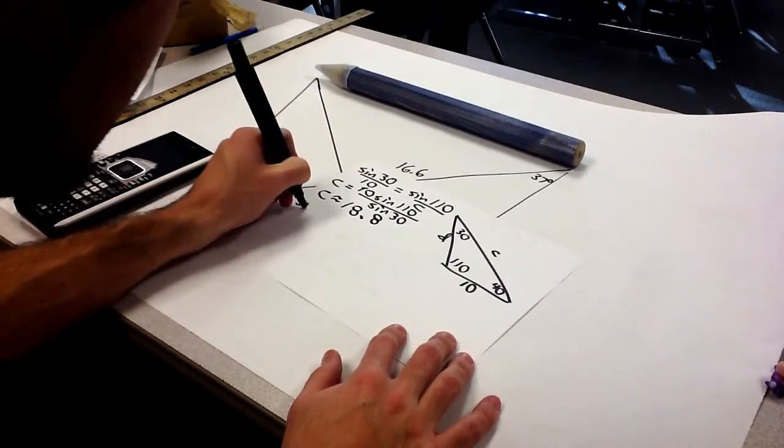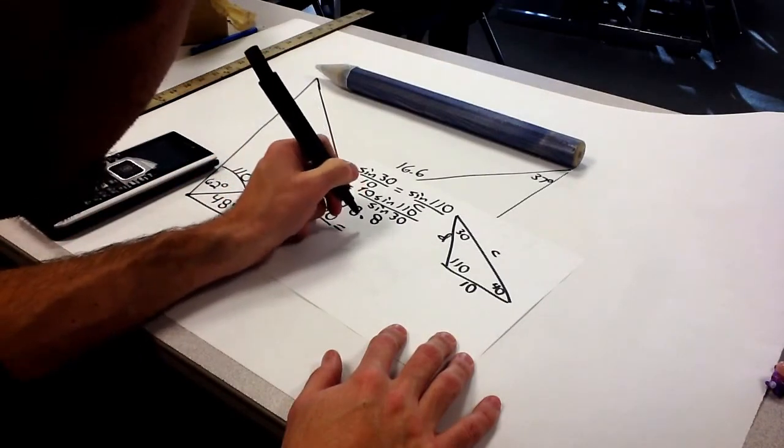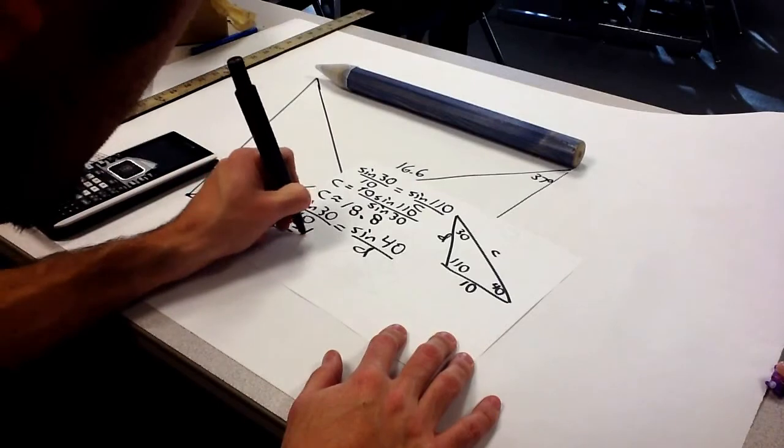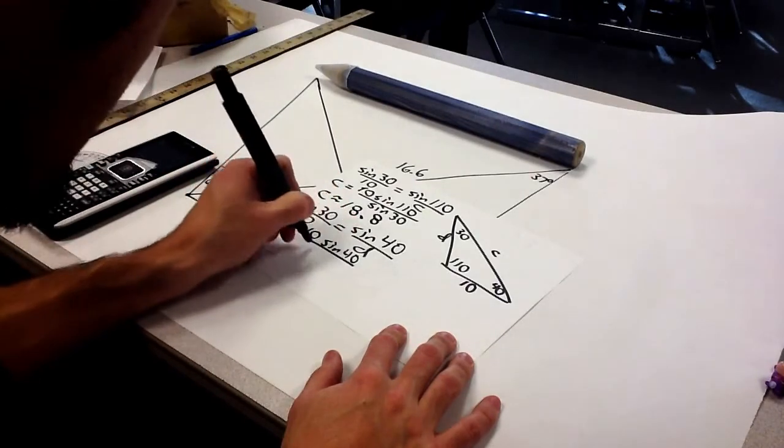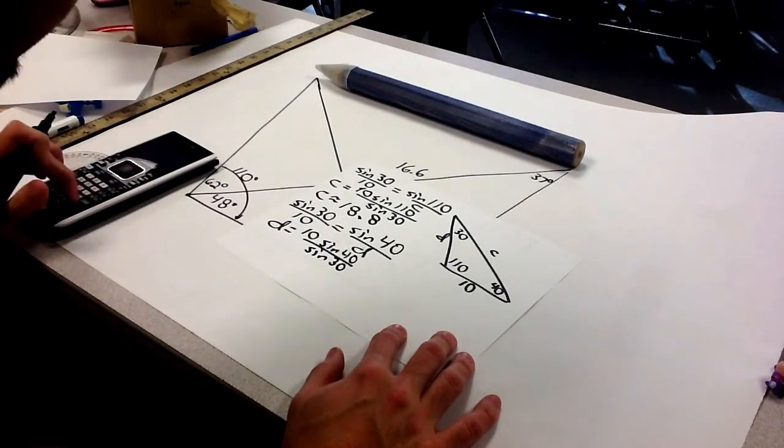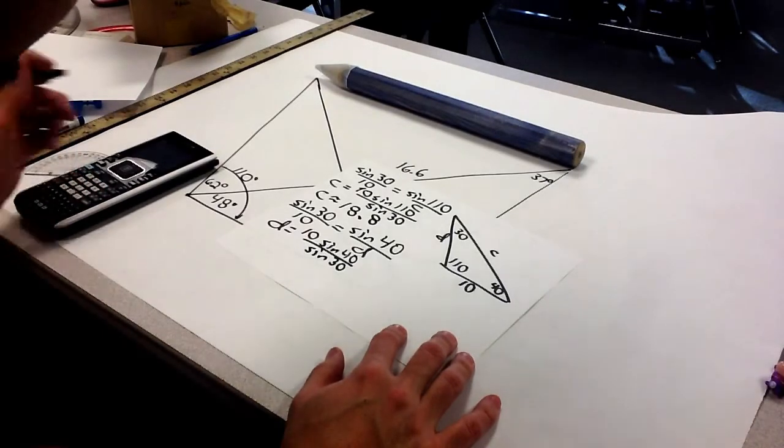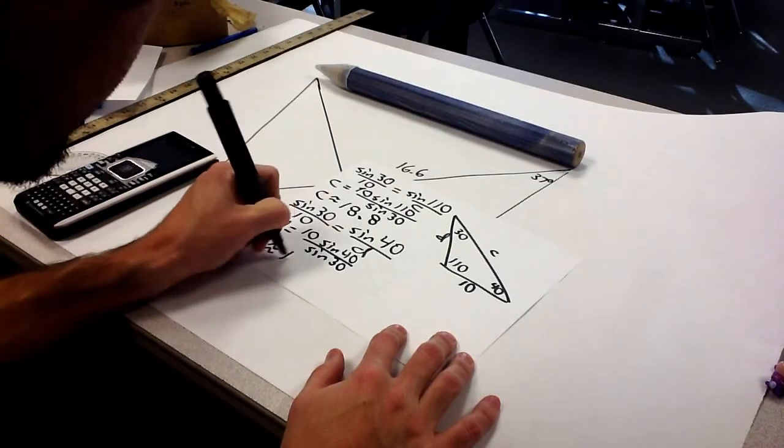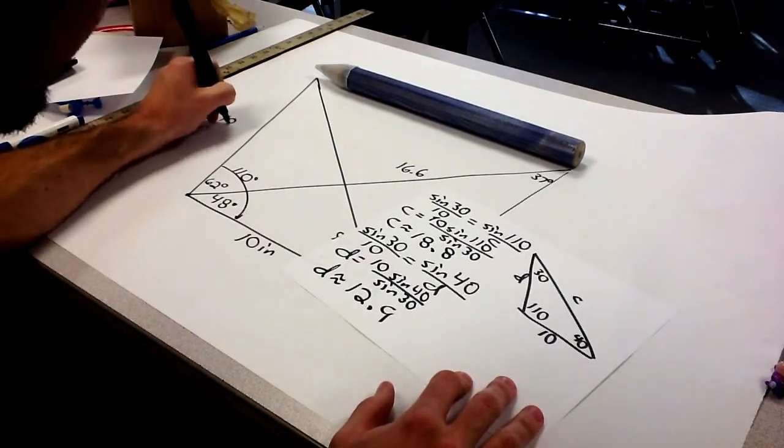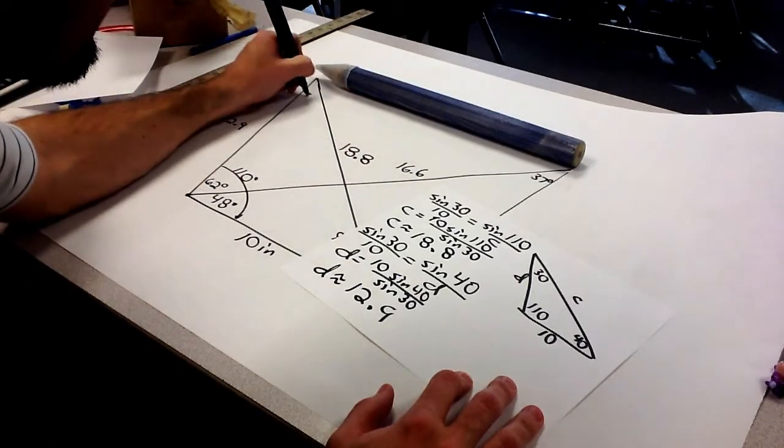And now for D, sine of 30 over 10 equals the sine of 40 over D. So, D equals 10 times sine of 40 over sine of 30. We get about 12.9. So, let's go back here. We got 12.9, 18.8, and 30 degrees.